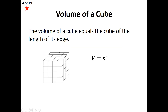Let's first begin with the volume of a cube. The volume of a cube is very simple — you find out what the edge length is. If the edge length is S, you cube it: S times S times S. For example, if the side length is 2, then the volume is 2 cubed, which equals 8. So the volume of the cube is 8.